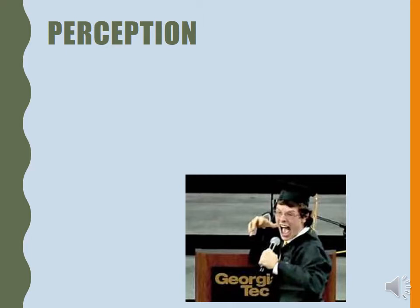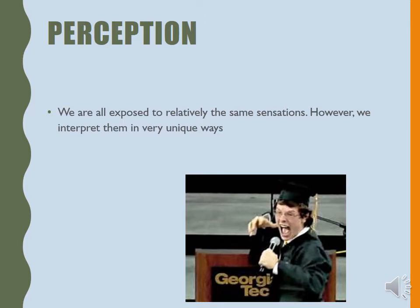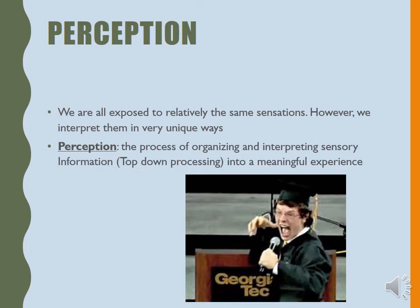Everyone's using the same sensory information and biology that runs off the same principles, so if I'm seeing green and blue, you're seeing green and blue. But here's where perception can differ. Is this person speaking excited? Angry? Passionate? How are you perceiving them in this snapshot? It all depends on you. We're exposed to relatively the same situations but our interpretations can be very unique. Perception is from top-down processing — we process and organize all of the sensory information that we get into a meaningful experience. So if your previous experiences are impacted by being yelled at a lot, your knee-jerk reaction might be that this is somebody who got really mad at their graduation. But if you're super excited and every graduation thing you've looked at recently is people getting happy and joyous, well then maybe that's how you're interpreting it.